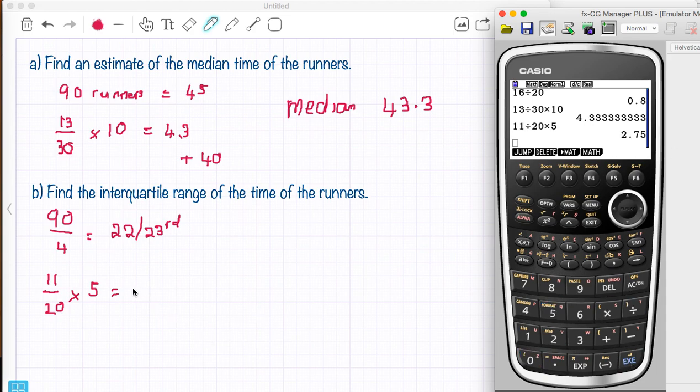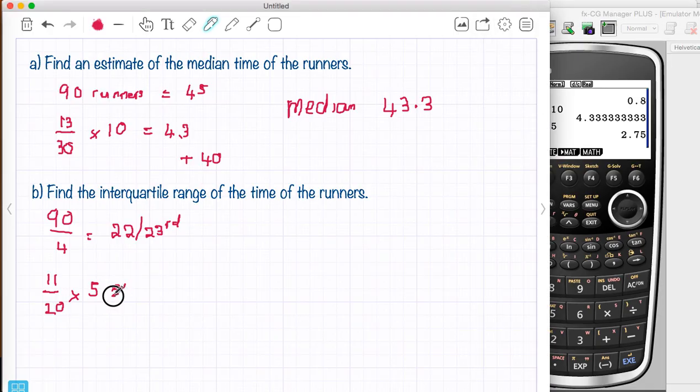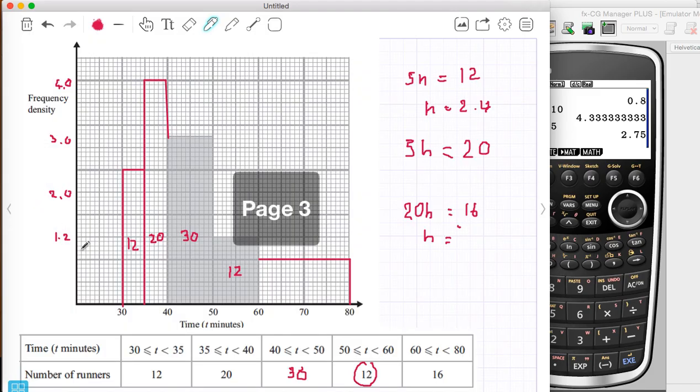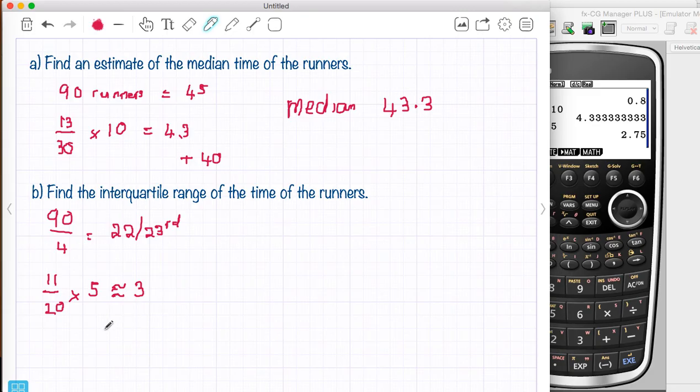So this is going to give me 2. I'm going to say that's approximately 3 because it's only an estimate anyway. So approximately 3. So I go back here. I take the lower part of the bar which is 35 and I add on 3 and that gives me the lower quartile.